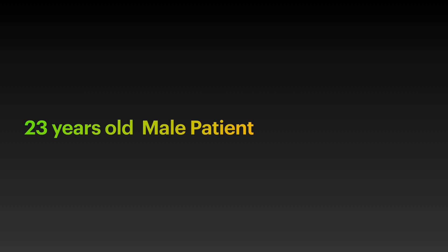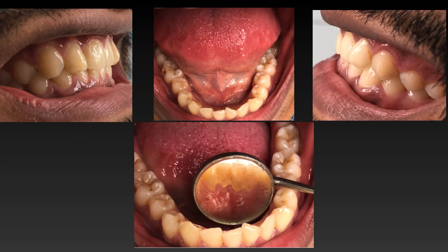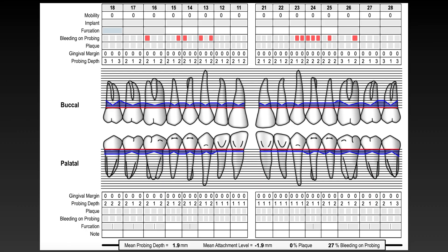We have a male patient that is 23 years old. Here you can see intraoral photos. This is a full perio chart, which pocket depth and bleeding points are recorded. You can see that the highest pocket depth is three millimeters, and there are no recessions and enlarged pockets, no mobility, and no furcation seen.